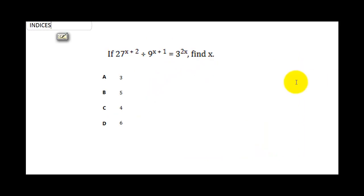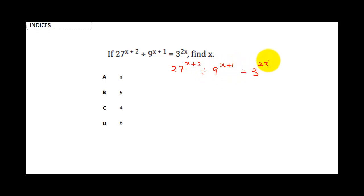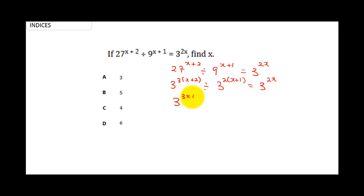The last question: if 27 raised to the power (x plus 2), divided by 9 raised to the power (x plus 1), equals 3 raised to the power 2x, find x. We convert everything to powers of 3: 27 is 3 cubed, so we get 3 raised to the power 3(x plus 2), divided by 3 squared raised to the power (x plus 1), equals 3 raised to the power 2x. Expanding: 3 raised to the power (3x plus 6), over 3 raised to the power (2x plus 2), equals 3 raised to the power 2x.